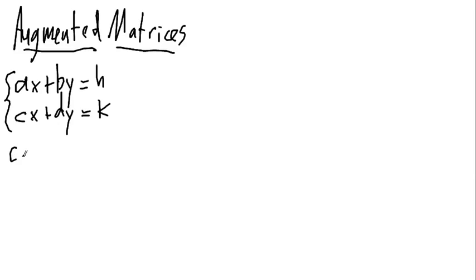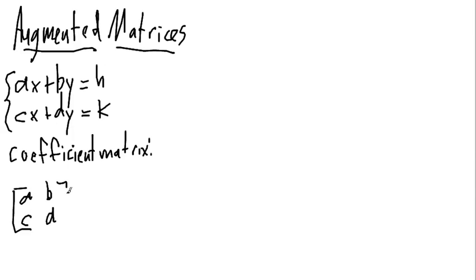And from this, we're going to get two matrices. We have, well, actually three. First, we have something called the coefficient matrix. And what the coefficient matrix looks like is we just take the coefficients from here, A, B, C, D, and we write them in that order. We get a two by two matrix, A, B, C, D.